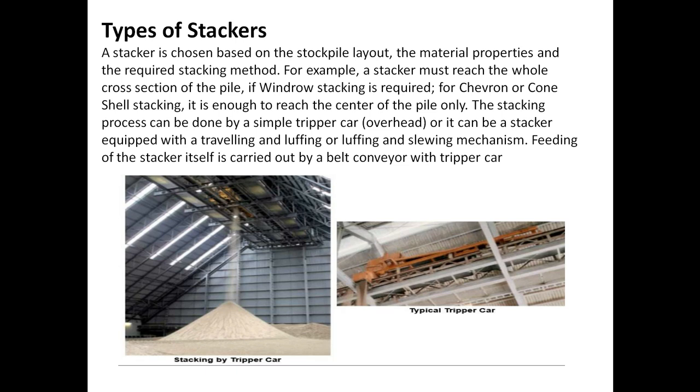Stacking in a covered stockyard can be done by a simple tripper car. A tripper car is installed in the structure suspended from the building roof. The travel of the tripper car is PLC controlled and programmed to build either a cone shell or a chevron stockpile.